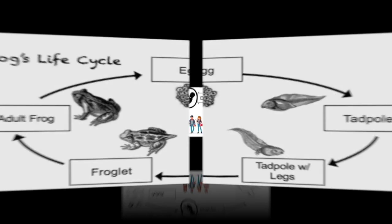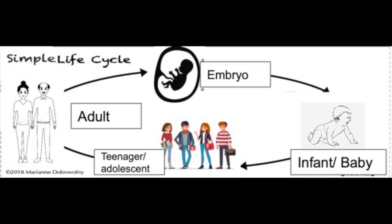In a simple life cycle, which is like our life cycle, we first start off as an embryo, then we grow into an infant or baby, then we head into our teenage years, and then we're an adult and we can reproduce, and the cycle starts all over again.